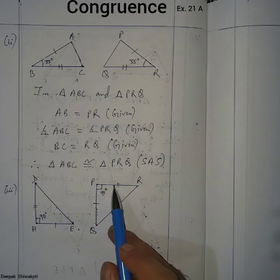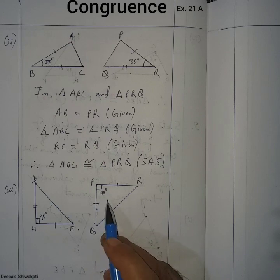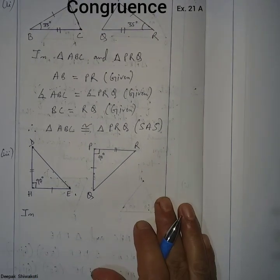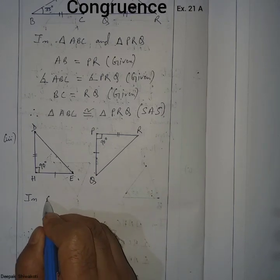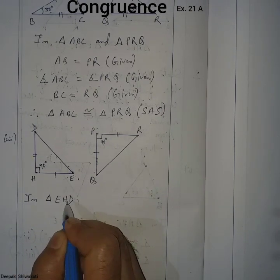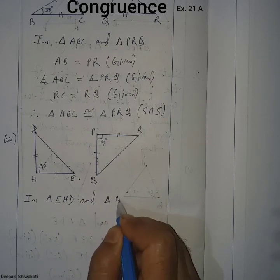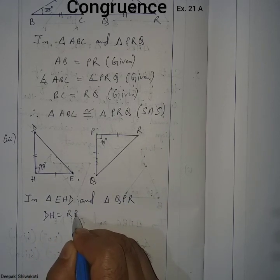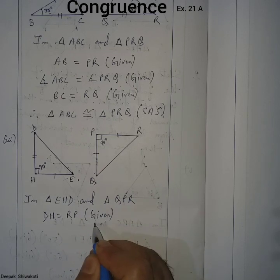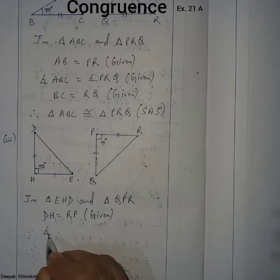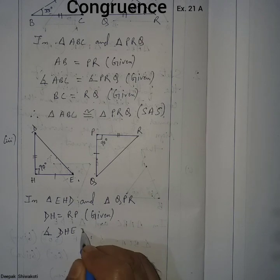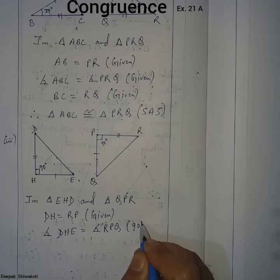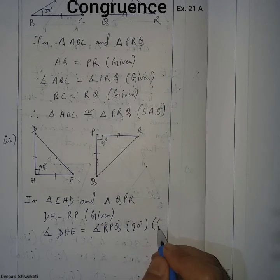Let us write: In triangle EHD and triangle QPR, side DH is equal to RP — given in the figure. Angle DHE is equal to angle RPQ — also given in the figure; both angles are 90 degrees.